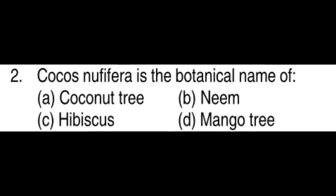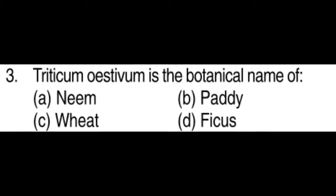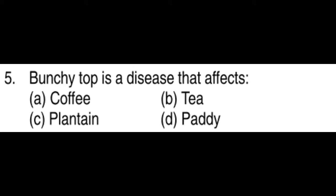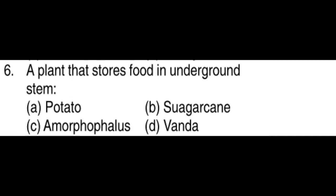Cocos nucifera is the botanical name of the coconut tree. Triticum aestivum is the botanical name of wheat. Bunchy top is a disease that affects plantain. A plant that stores food in its underground stem is the potato.